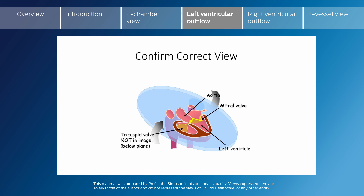We can see that we have now left the tricuspid valve below the plane of inclination, so we do not see it when we look at the left ventricular outflow tract. What we would like to see is the left ventricle connecting to the aorta, which heads superiorly and to the right towards the fetus's right shoulder. We can also see that we are now beginning to move above the level of the right atrium and starting to cut the superior vena cava in transverse section.